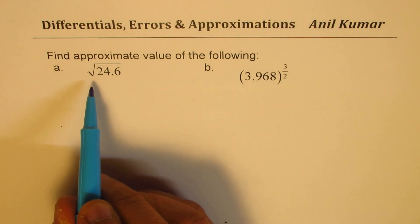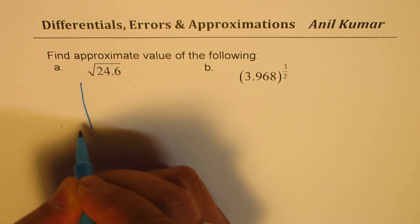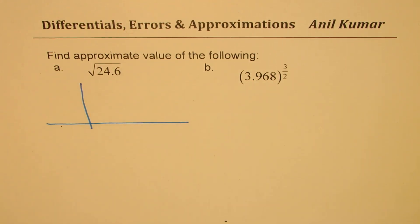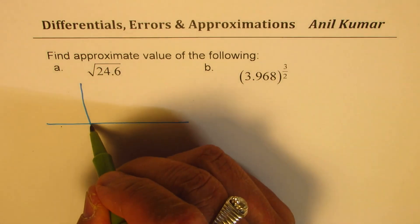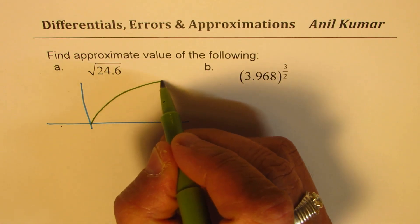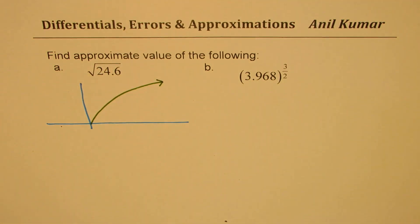So we are trying to find the square root value. Let us see how a square root function looks like. If I sketch a graph of a square root function, I will get something like this. That is how a square root function may look like.